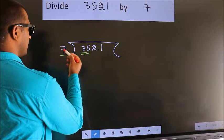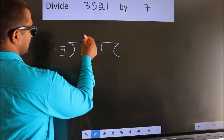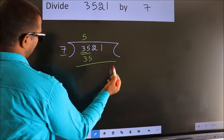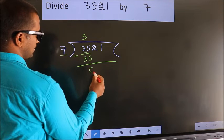When do we get 35? In 7 table. 7 fives, 35. Now, we should subtract. We get 0.